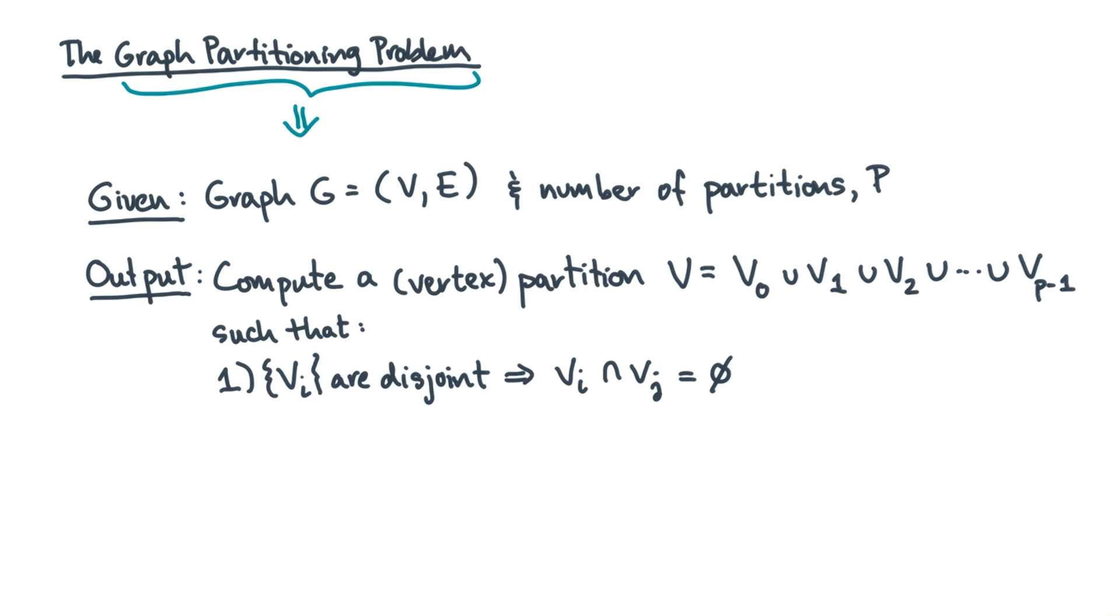First, these partitions should cover all the vertices but should be disjoint. The partition should also be about equal in size. And the number of cut edges should be minimized. That is the graph partitioning problem in a nutshell.